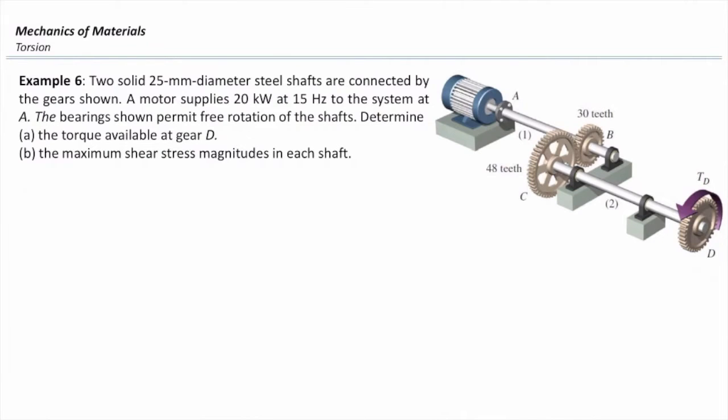Two solid 25 mm diameter steel shafts are connected by the gears shown. The motor supplies 20 kW at 15 Hz to the system at A. The bearing shown permits free rotation of the shafts, so I can simply ignore those three bearings. Determine: A. What is the torque available at D?